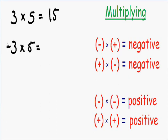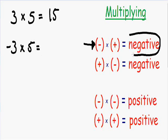But let's say we have negative 3 times positive 5. We have a negative number being multiplied by a positive number — a negative times a positive. We know this is going to give us a negative answer, so instead of positive 15, our answer is going to be negative 15.